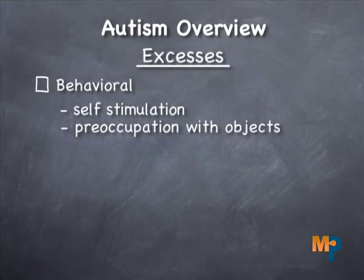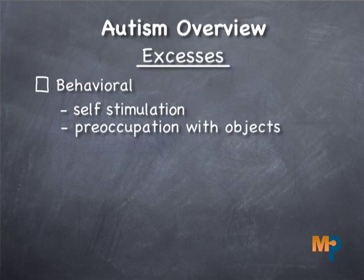Another behavioral excess for children with autism often relates to preoccupation with objects or restricted interests related to items. Many kids with autism might prefer interacting with things instead of people. Of course this interferes with their ability to interact with other people and their ability to learn, respond, and attend to instructors.